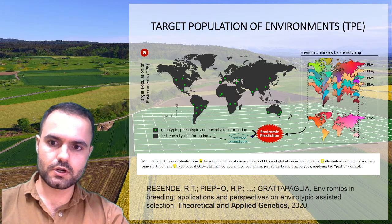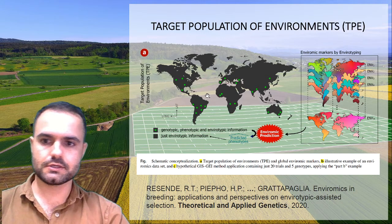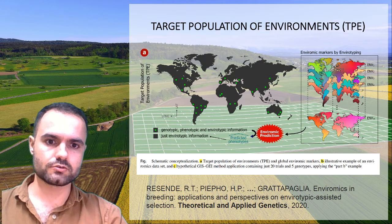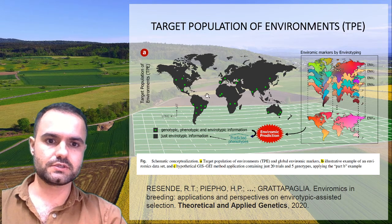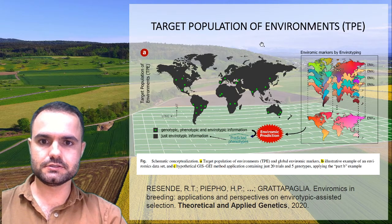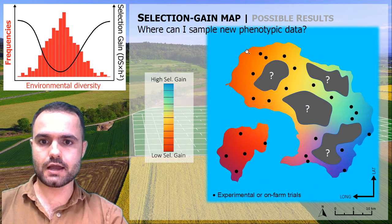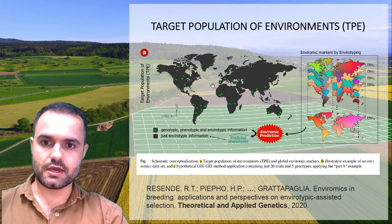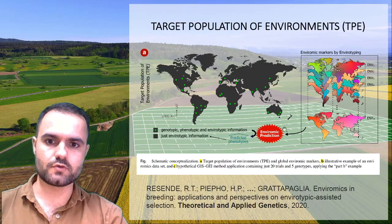Now let's discuss more theoretical concepts. The Target Population of Environments (TPE) refers to the sites where breeding is done, or simply the locations that breeding programs aim to serve — the market consumers of the breeding scale. The TPE can be spread across a very wide distribution or be local, like islands, continents, countries, or a company area. We need to evaluate sites whether they are local or widely spread.